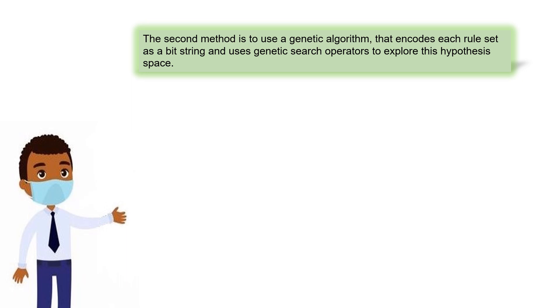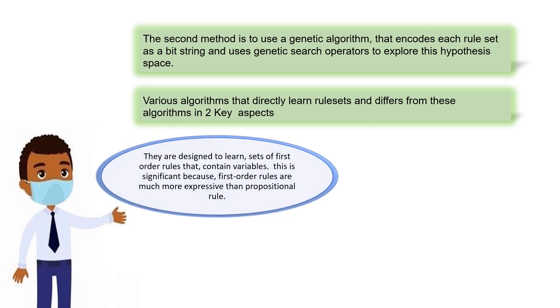Various algorithms directly learn rule sets and differ from these algorithms in two key aspects. They are designed to learn sets of first-order rules that contain variables. This is significant because first-order rules are much more expressive than propositional rules.